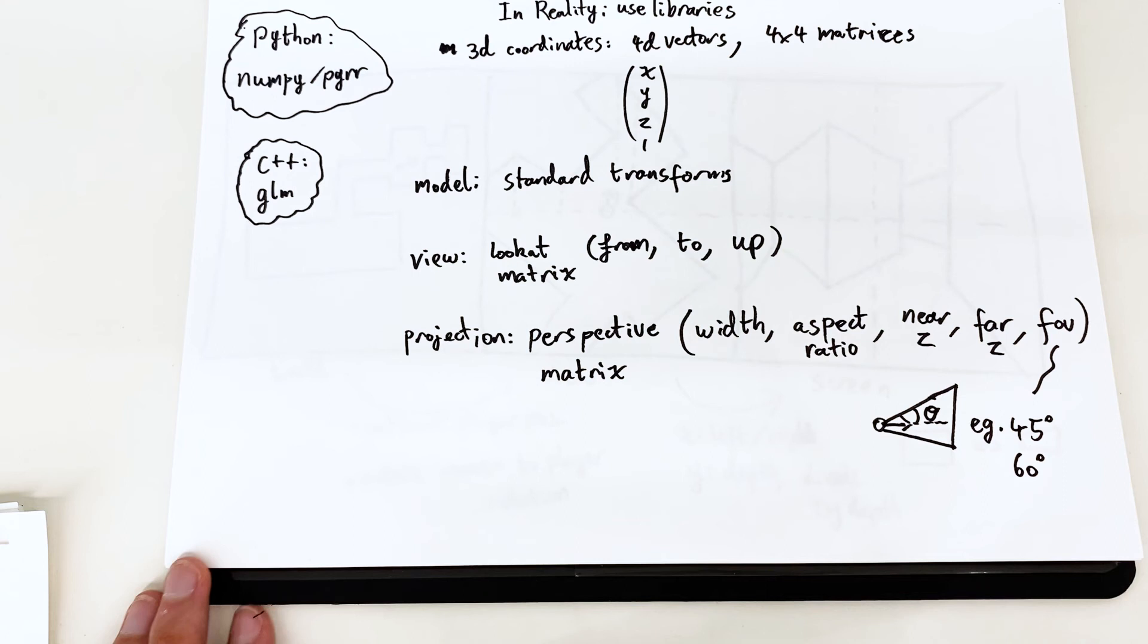Anyway, for the projection transformation, again, this is so common that there's a routine for it called the perspective matrix. Parameters here are the width of the screen, the aspect ratio, the near Z and far Z, so anything closer than near Z will not be drawn, and anything further than far Z will not be drawn, and the field of view angle. Common values there are like 45 degrees or 60 degrees.